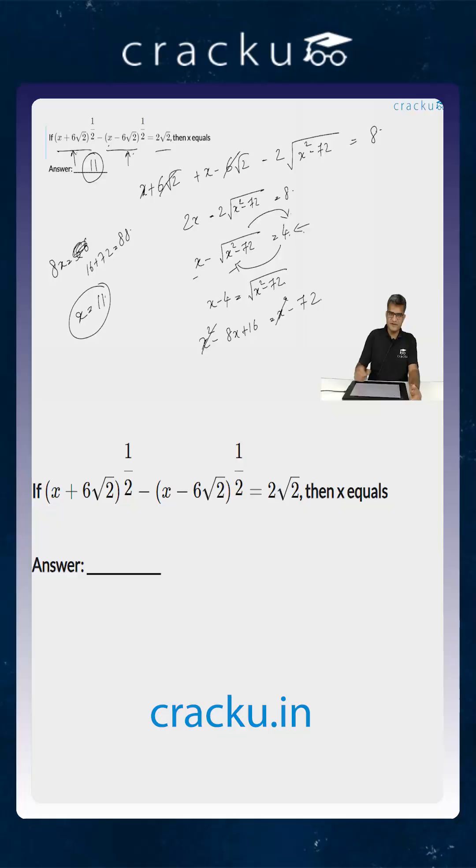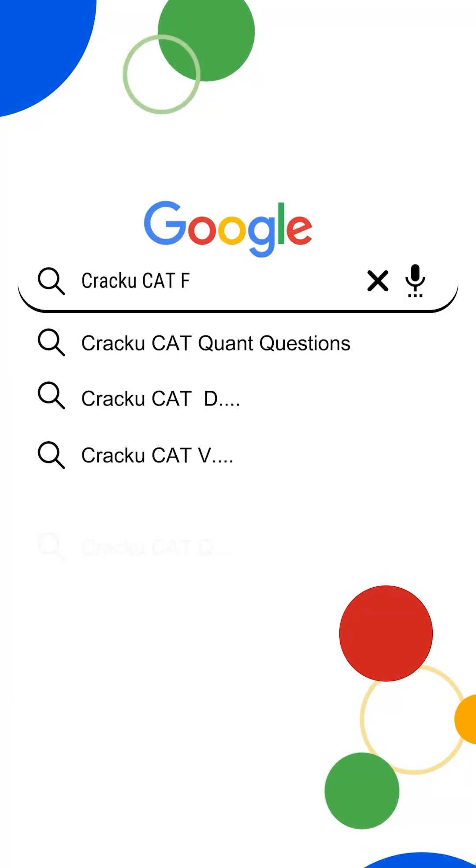So the answer for this question is 11. To download all important formulas for CAT and for the quick revision, just go to Google and search cracku CAT formulas pdf.